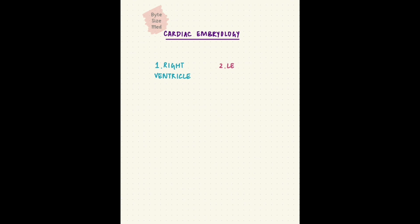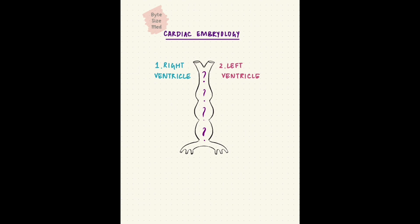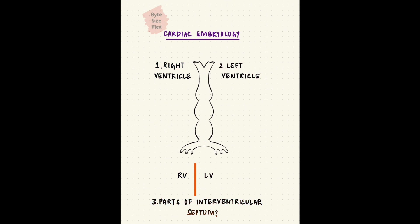Done with the atria, we move on to the ventricles. The ventricles develop from the heart tube. Your task is to recall which parts of the heart tube form the right and left ventricles. The two are separated by a septum — name the two parts of that septum. Pause the video here and take as much time as you need.